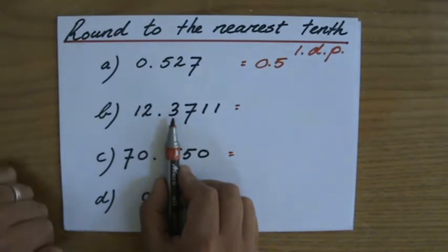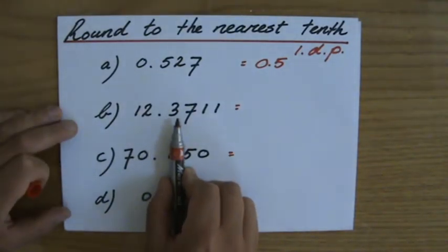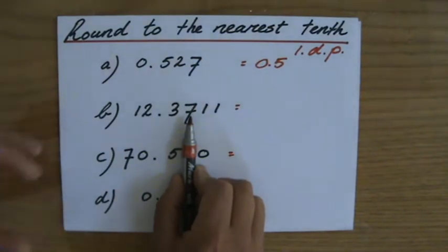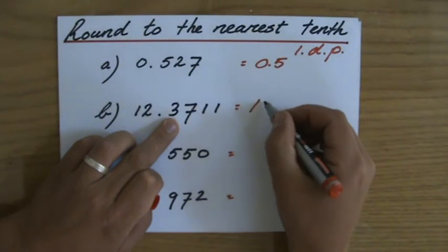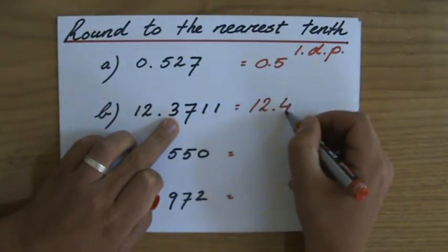A three. Now it either stays a three or it goes up to a four when it's a five or higher. That's my next number. Is it a five or higher? Yes, it is. So the three will go to a four. So it's going to be 12.4.